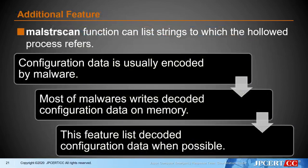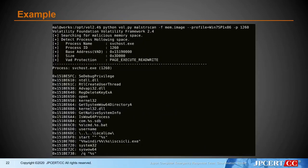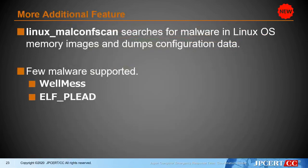MalconScan has another feature called Malware-STR scan. The Malware-STR scan function can list strings that a given process refers to. Configuration data is usually encoded by malware; however, most malware writes decoded configuration data to memory. This function lists decoded configuration data when possible. Unlike the strings command which may list unreferred strings, this tool only displays strings referred to in the code and can also display the heap area. Malware-STR scan also supports Linux-based memory images, though there are still few Linux malware families that can be scanned.